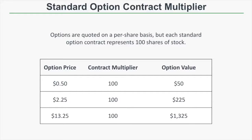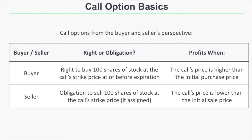Let's look at some in-depth examples so you can see how these concepts relate to call options and put options specifically. From the buyer's perspective, a call option represents the right to buy 100 shares of stock at the call strike price at or before expiration. A call buyer profits when the call's price is higher than the initial purchase price. So if an option is worth $5 and rises to $6, the trader will have a profit of $100 because the contract multiplier is 100.